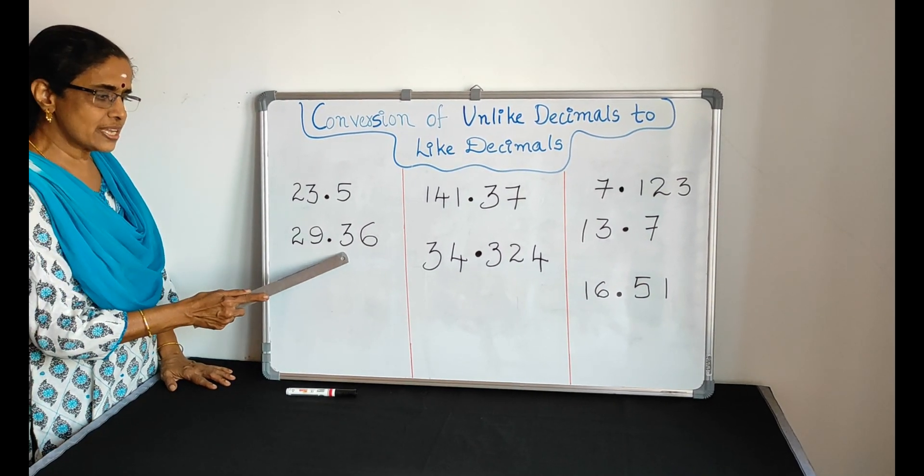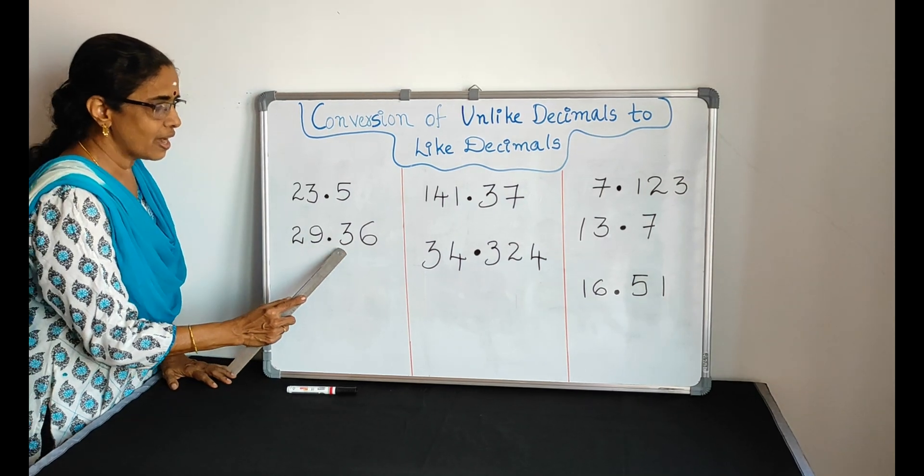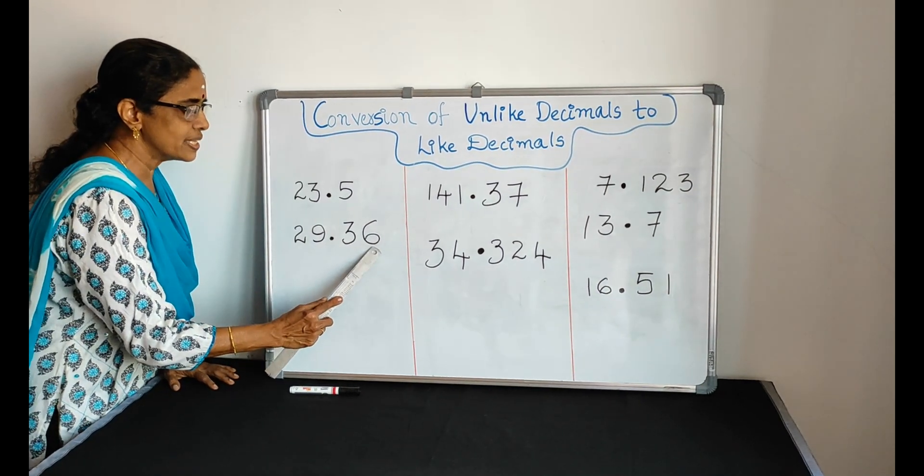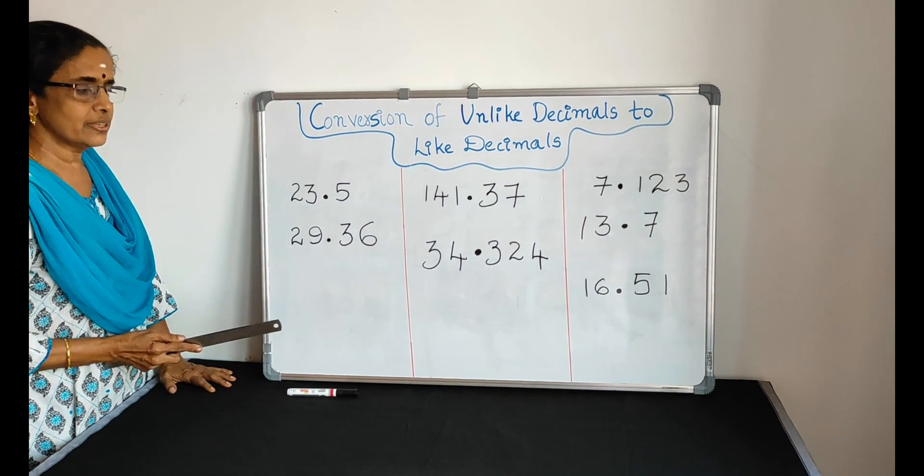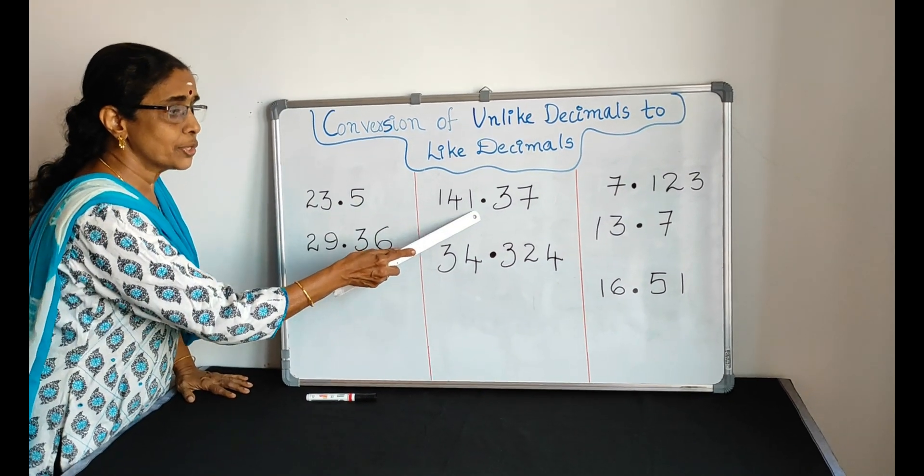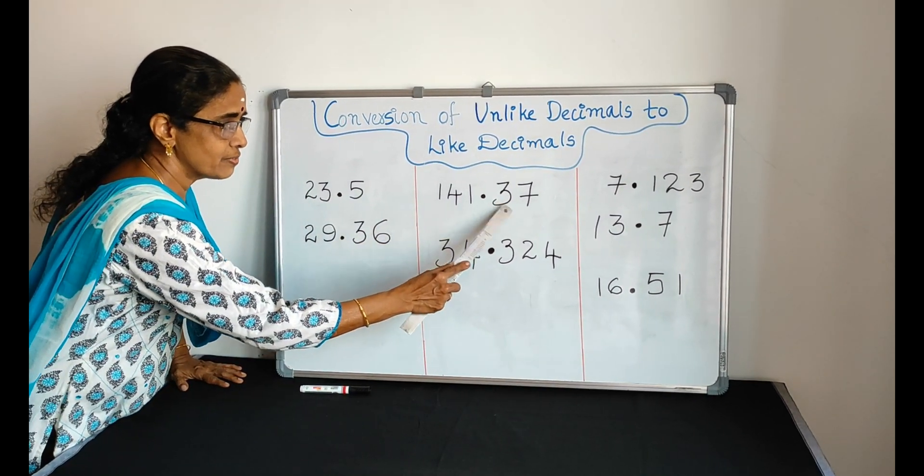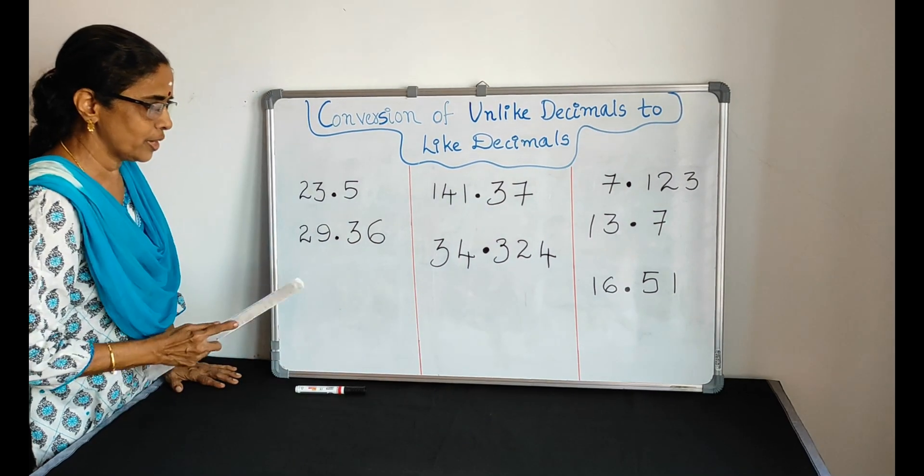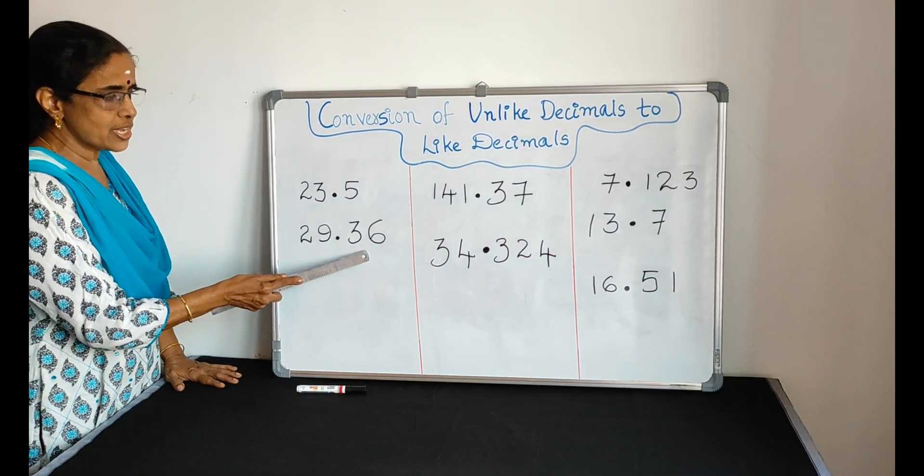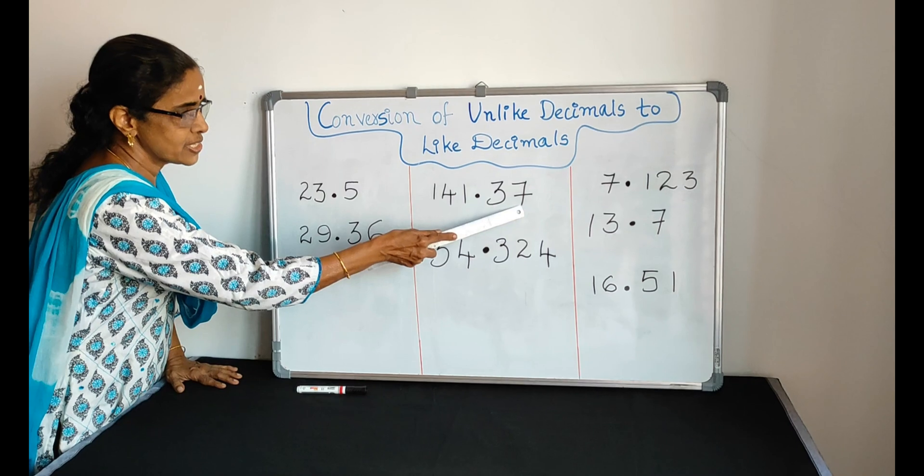Here, 29.36 has two digits after the decimal point. Here also, 141.37 has two digits after the decimal point. So, 29.36 and 141.37 are like decimals.